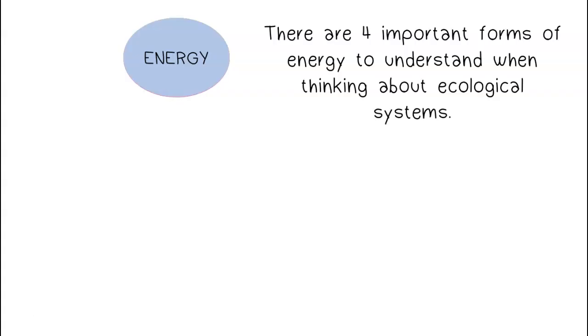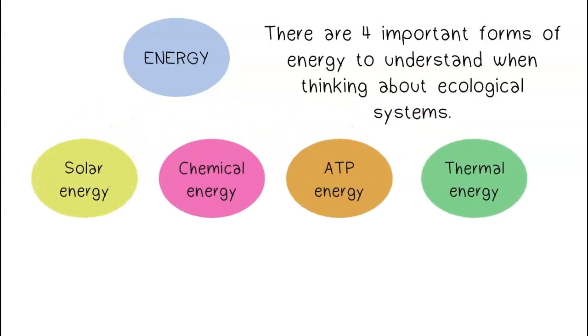There are four important forms of energy to understand when thinking about ecological systems: solar, chemical, ATP, and thermal energy.